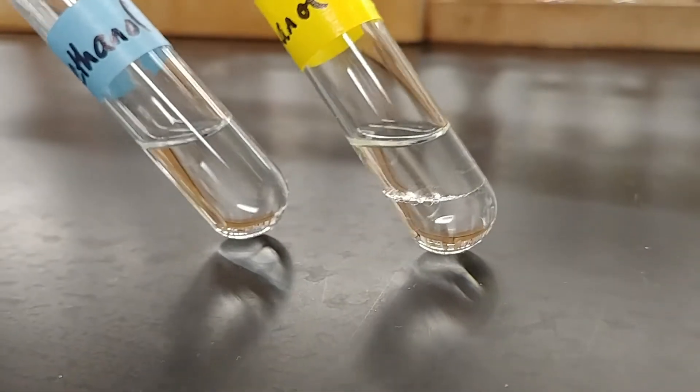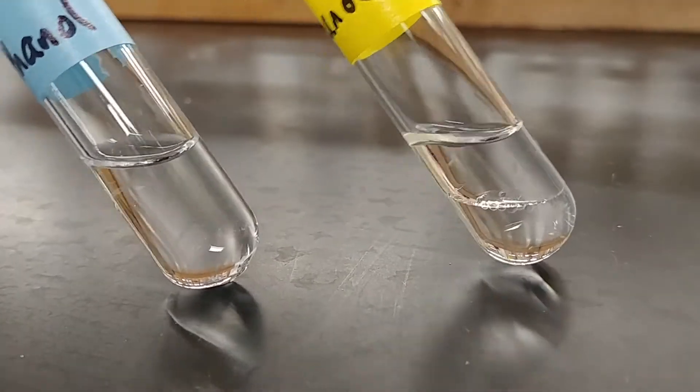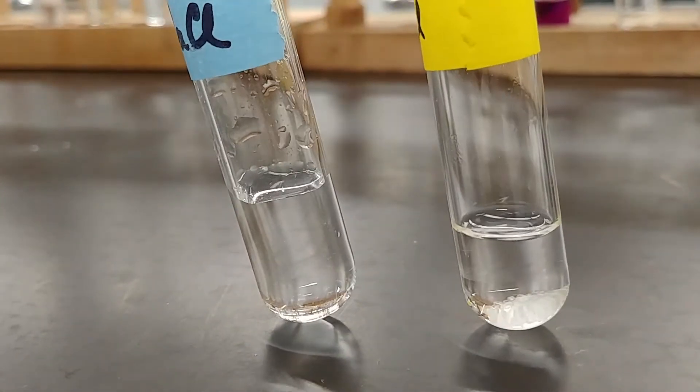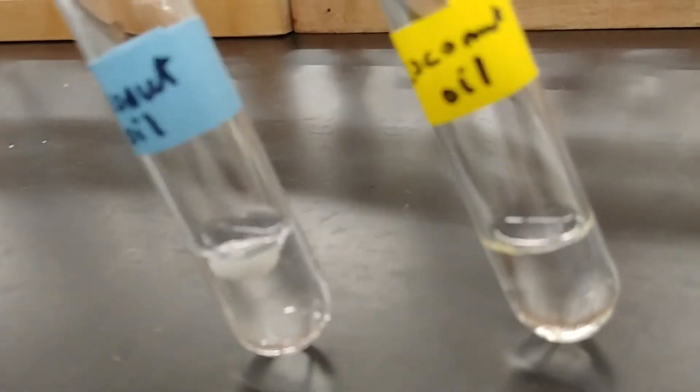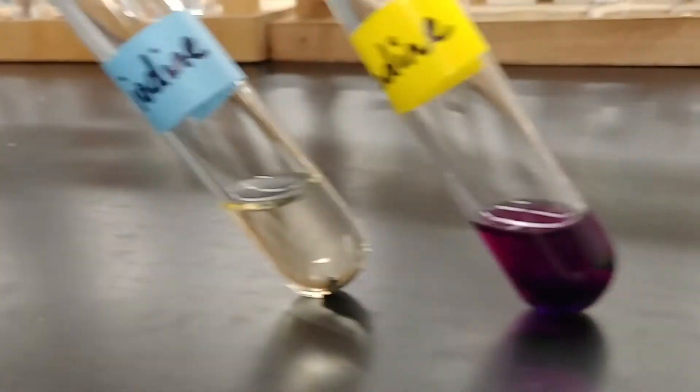So again, comparing the ethanol and the cyclohexane in the two different solvents. The yellow tape is the cyclohexane. The blue tape is the water. And then to go through our solids again, the sodium chloride, the coconut oil, the iodine. We already saw the ethanol. And then finally, we have the sugar.